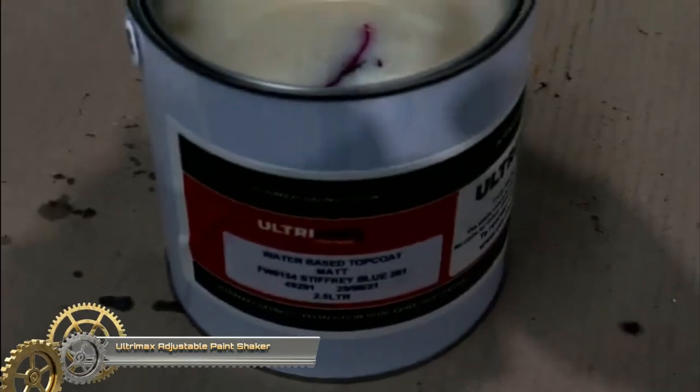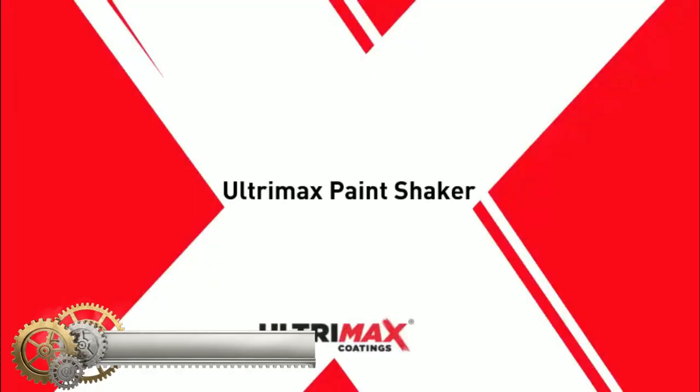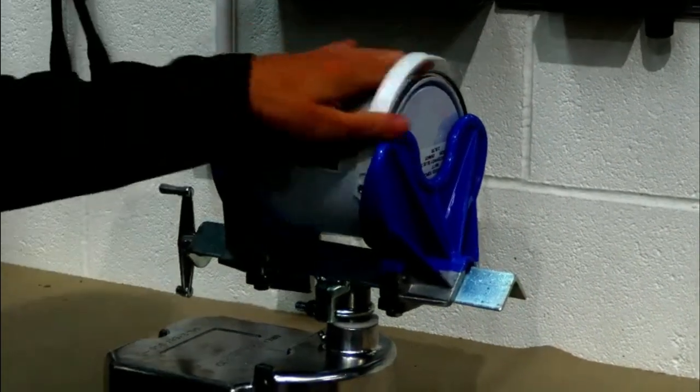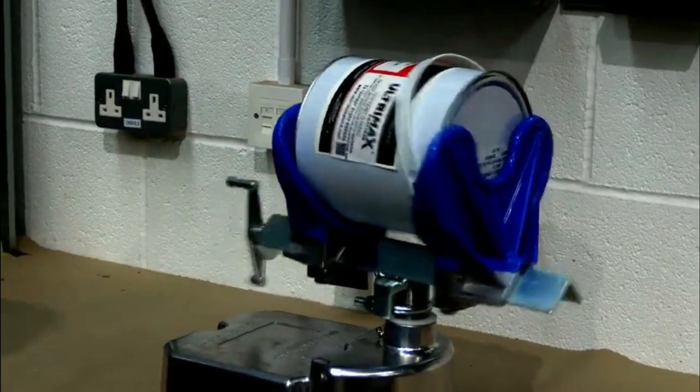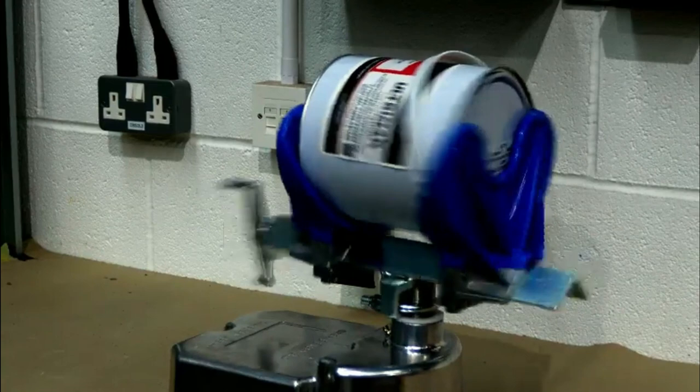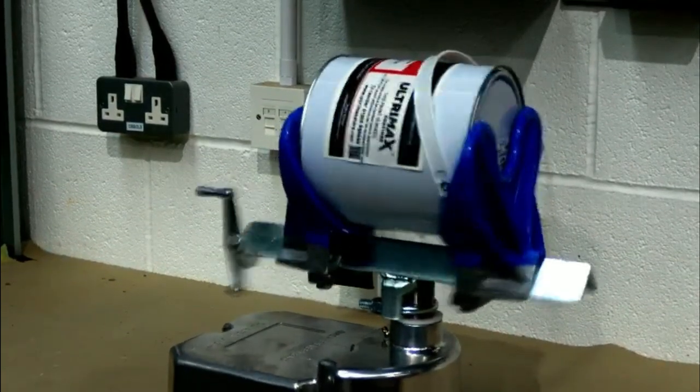Air-Operated Bench Mounted Paint Shaker. Never mix the paint by hand again with the Handy Ultramax Paint Shaker. Taking up to 5.0L tins and being adjustable, this bench or hard surface-mounted unit is air-operated and can make paint mixing easy within a few minutes for perfect results every time.